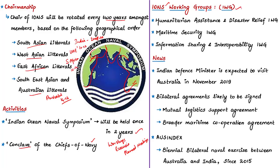There are three main working groups: one is the Humanitarian Assistance and Disaster Relief IWG, the second is the Maritime Security IWG, and the third is the Information Sharing and Interoperability IWG. Not all IONS members are part of every working group — only select countries are members of a particular working group. India is the chair for the Humanitarian Assistance and Disaster Relief IONS Working Group, and India and Australia are co-chairs for the Information Sharing and Interoperability IONS Working Group.